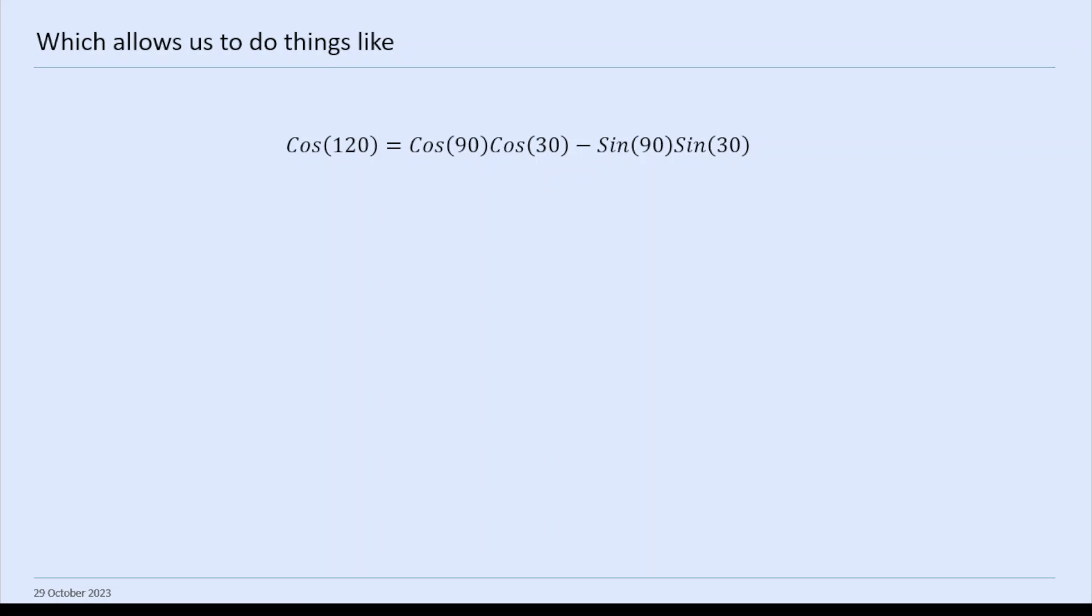Cos 120, we can do cos 120 as cos 90 cos 30 minus sine 90 sine 30. Cos 90 is 0, so that's really easy, that just drops out. Sine 90 is 1, and sine 30 is a half. So cos 120 is 0 minus a half, which is just minus a half.